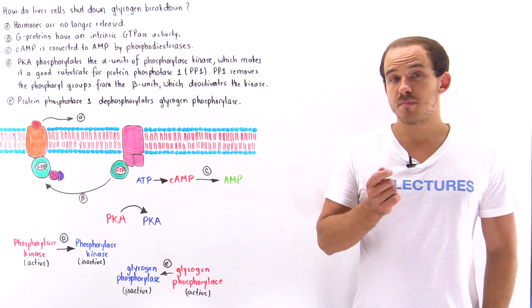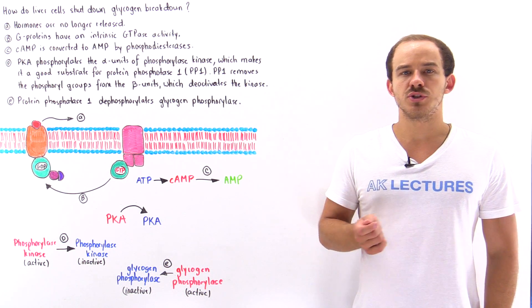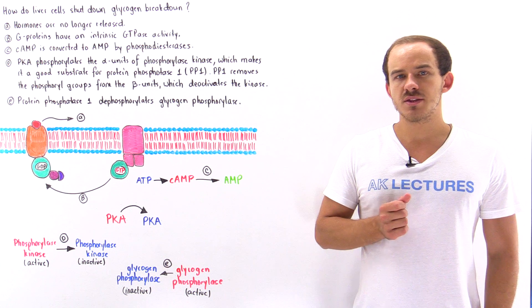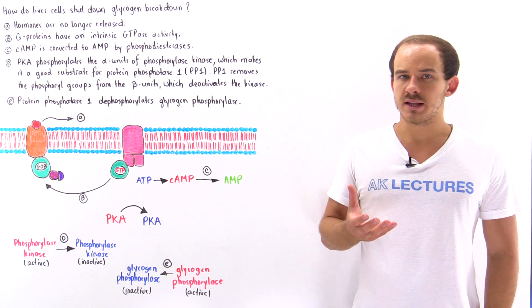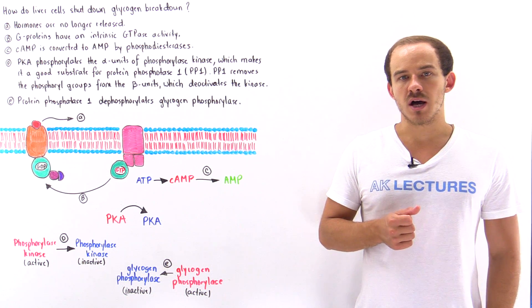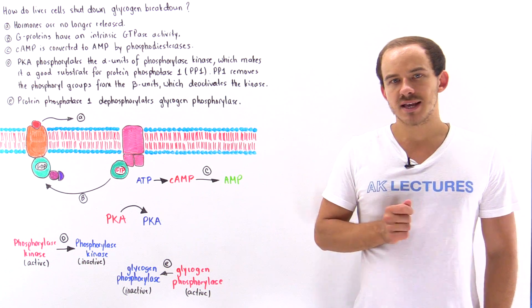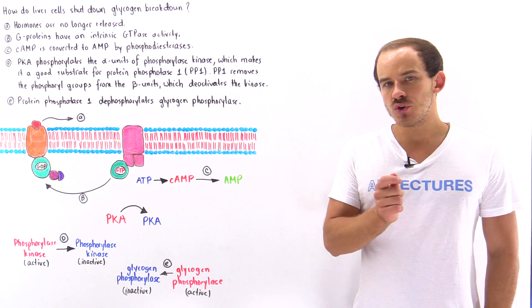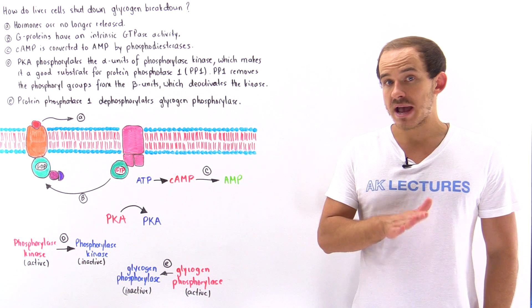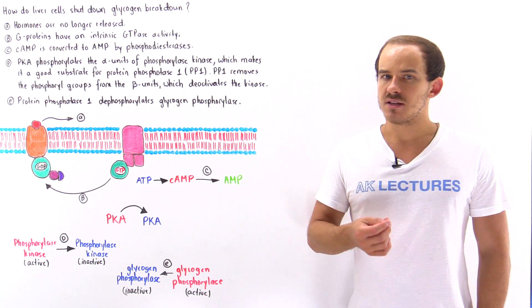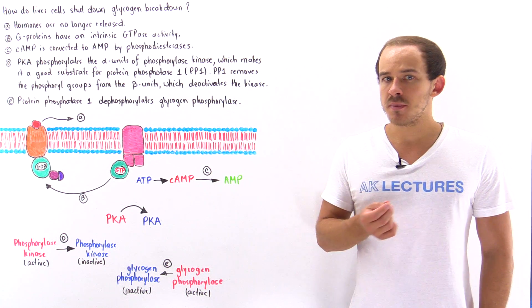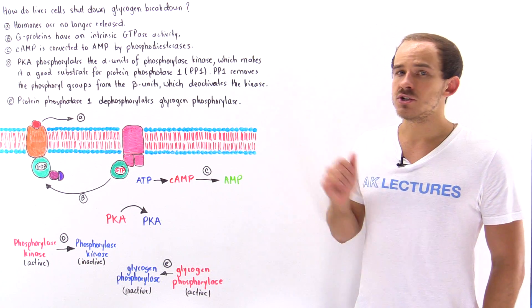The liver cells of our body are responsible for bringing down glycogen into glucose and then using that glucose to regulate the glucose levels in our blood. But once that process takes place and once the glucose levels in our blood return back to normal, the liver cells must be able to terminate and shut down glycogen breakdown.